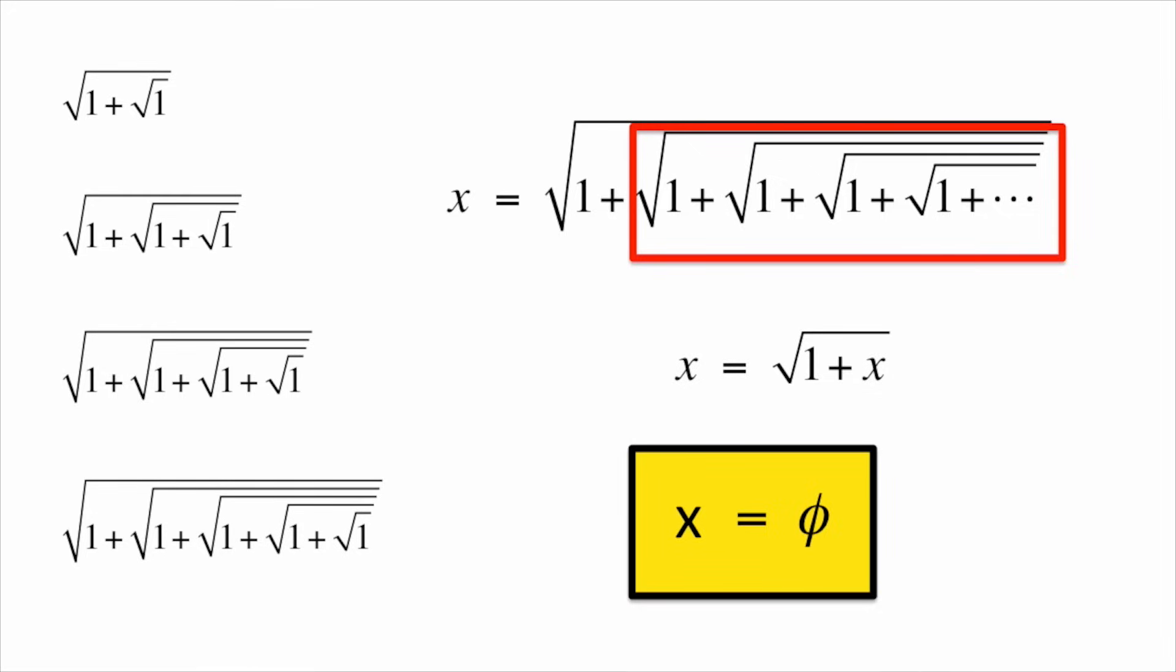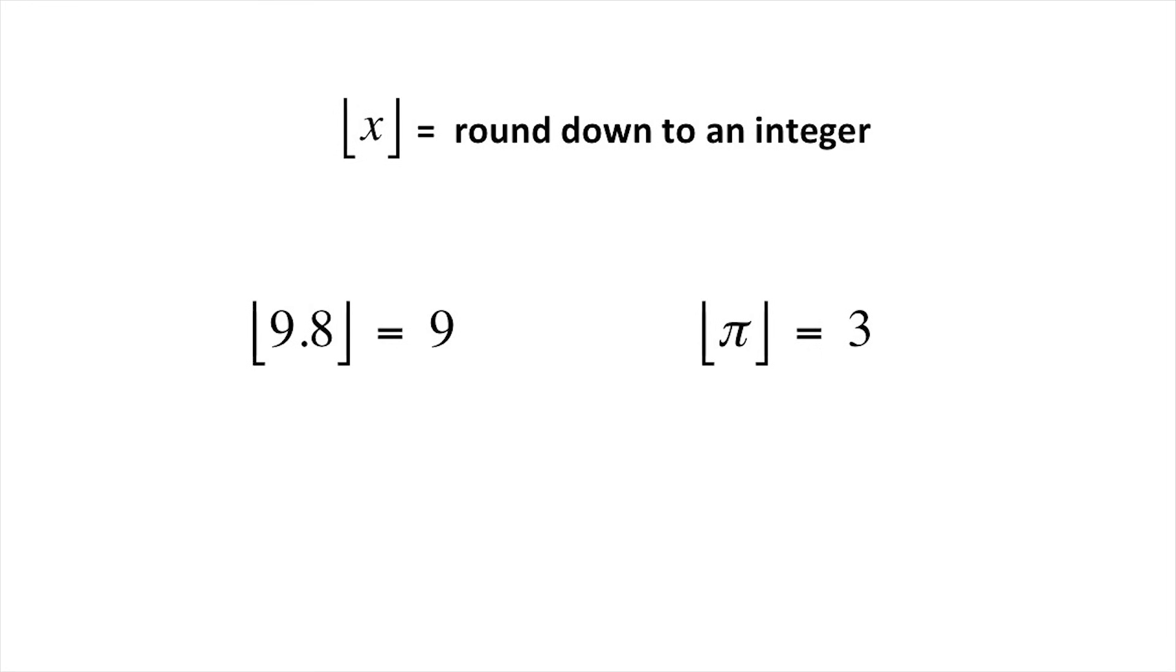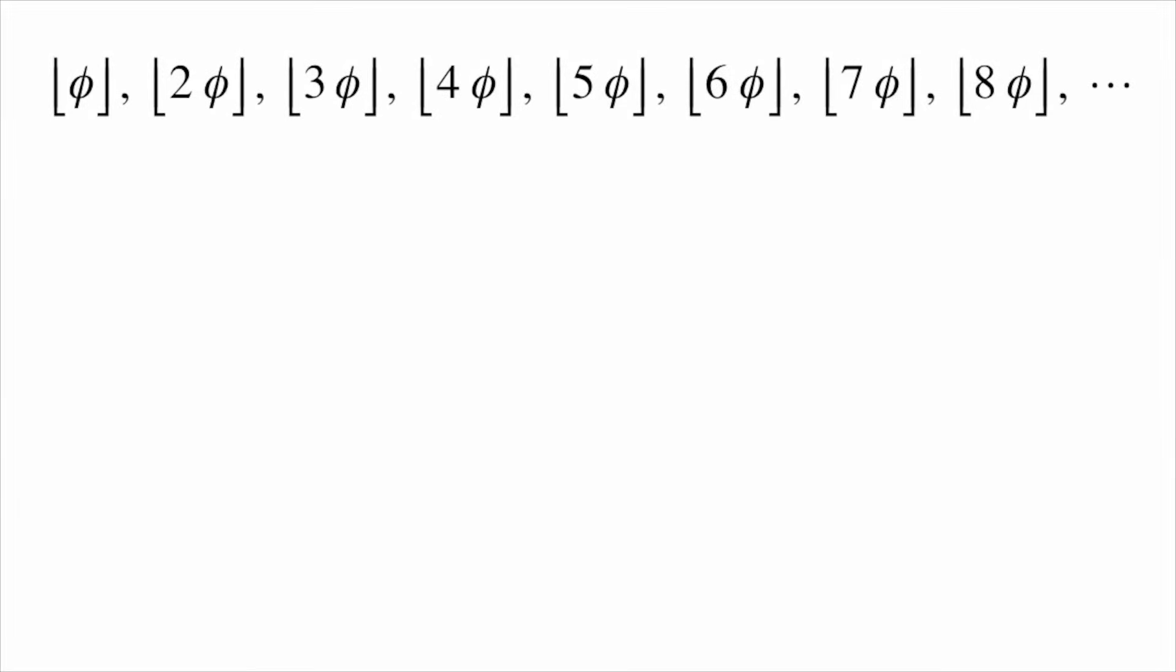Here's a different connection to numbers. We say that the floor of a number is what you get when you round down, so for example, the floor of 9.8 is 9, and the floor of Pi is 3. Now let's look at the floor of each multiple of Phi. Calculating the first few values produces the sequence 1, 3, 4, etc.